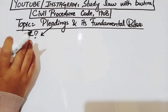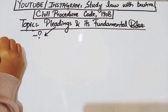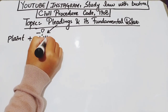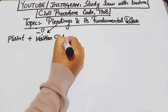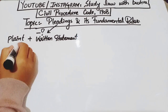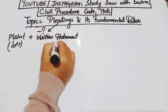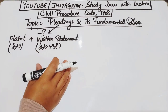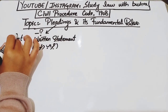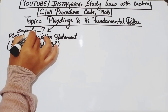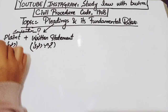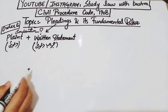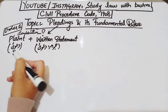Pleading and its fundamental rules. First of all, let's see what pleading is. Pleading simply means a plain and written statement. Pleading is a combination of plaint — which we call 'Dava' — and written statement — which we call 'Jawab Dava'. So pleading is basically the combination of Dava and Jawab Dava. Pleading is dealt with under Order 6 of the Civil Procedure Code 1908.